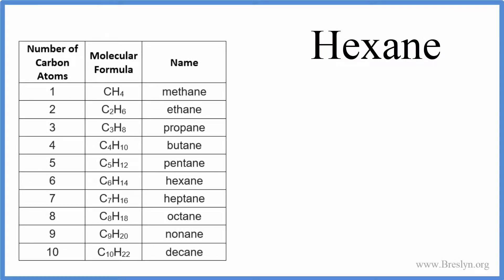To write the formula for hexane, we need to recognize that hexane is what we call an alkane. That means it's made up of carbon and hydrogen, and all the atoms are connected by single bonds. For hexane, we have C6H14.